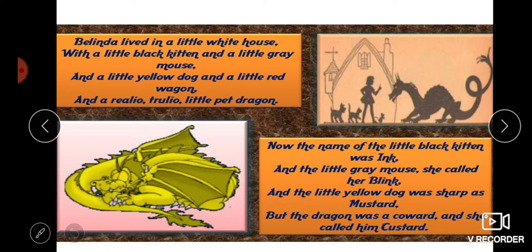Belinda lived in a little white house with a little black kitten and a little grey mouse, and a little yellow dog and a little red wagon, and a Realio Trulio little pet dragon.